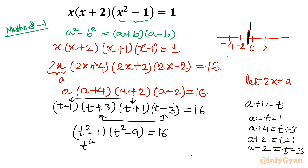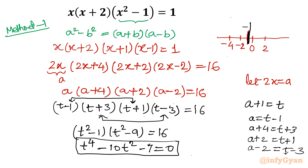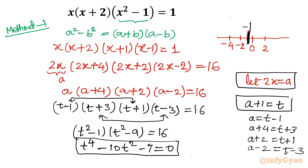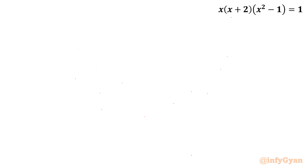Expanding: t to the power 4, then minus 9t squared minus t squared gives minus 10t squared, plus 9 equals 16. Moving 16 to the left gives minus 7. So we have t to the power 4 minus 10t squared minus 7 equal to 0. This is a quadratic equation in t squared.